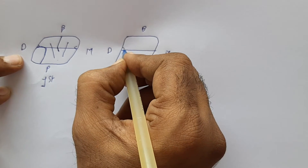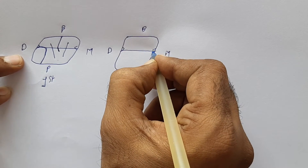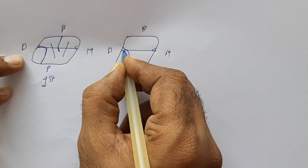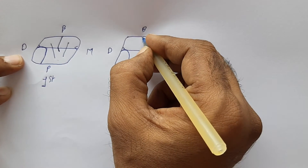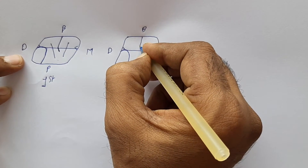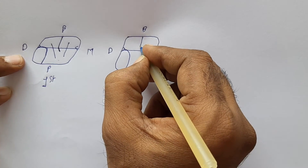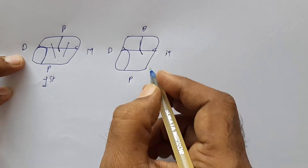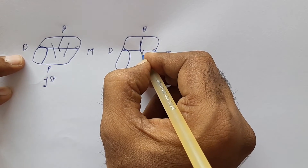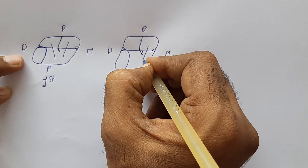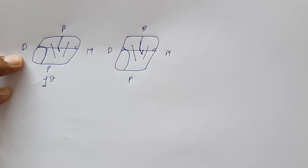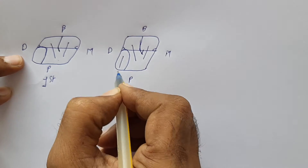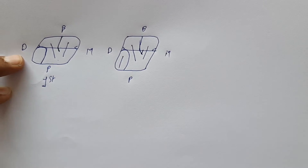This is the distal palatal, this is the central groove, we have a triangular fossa here. The palatal developmental groove joins into the distal triangular fossa; buccal developmental grooves enter here and it gives a Stuart groove here. This is the transverse ridge and this is the oblique ridge.